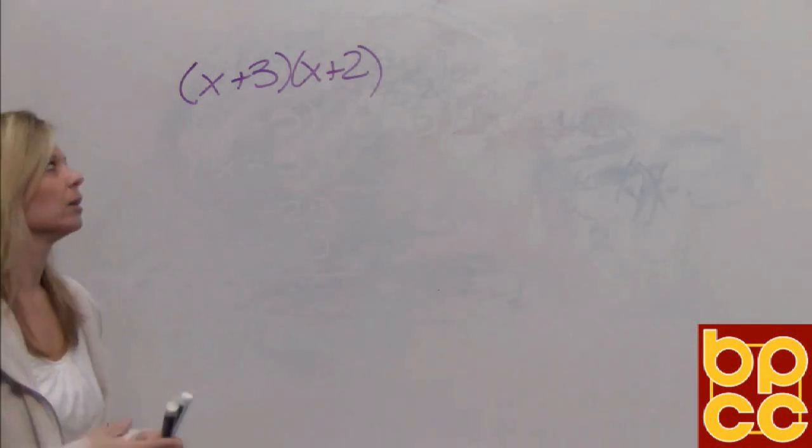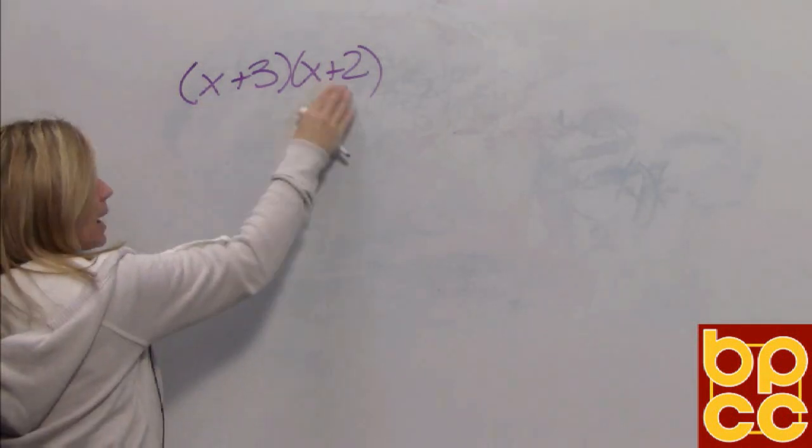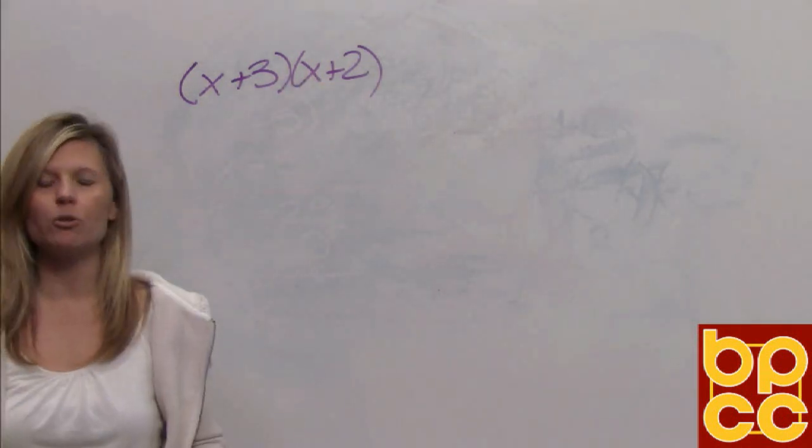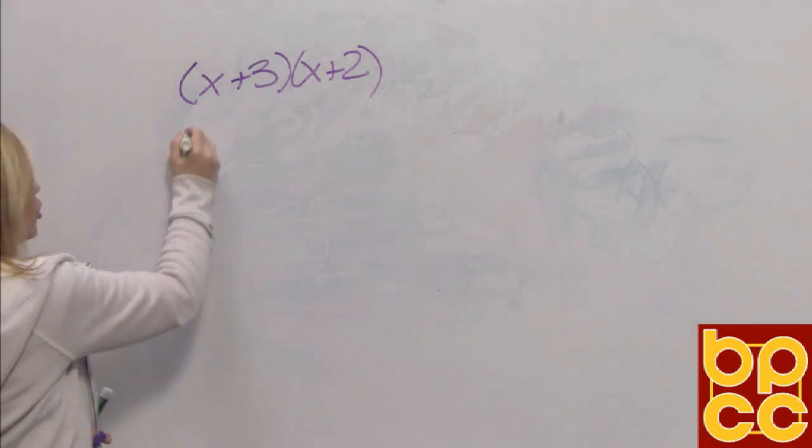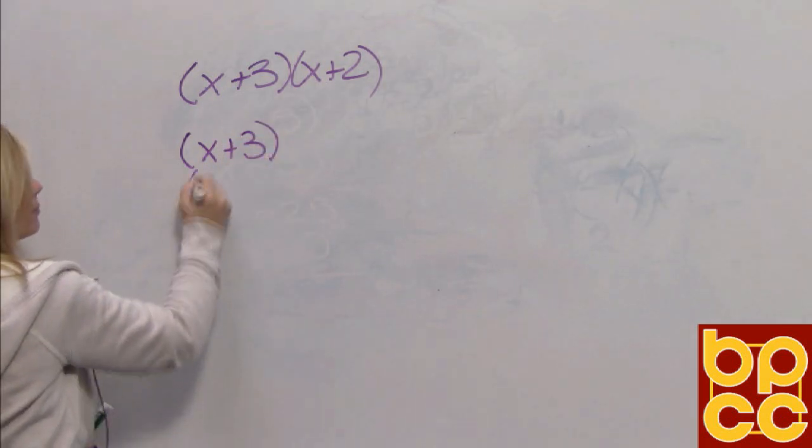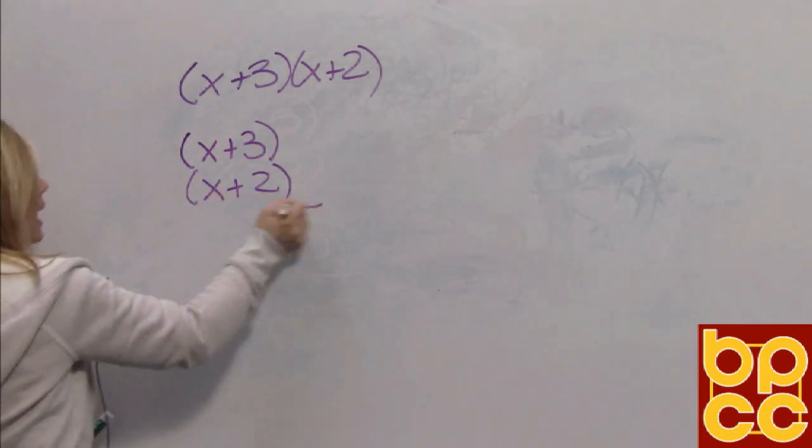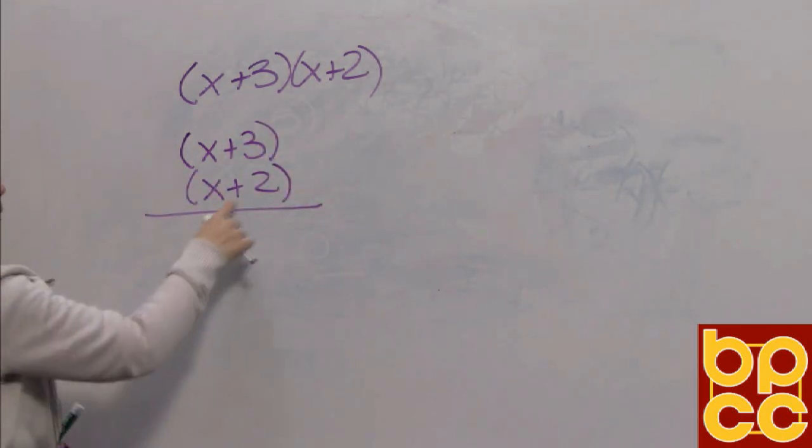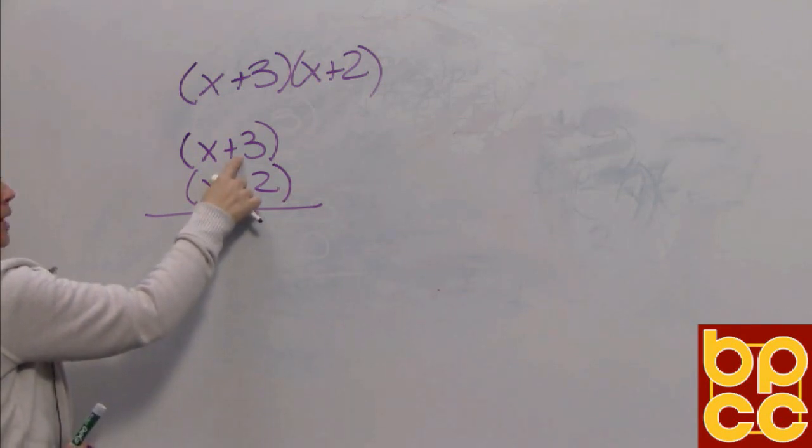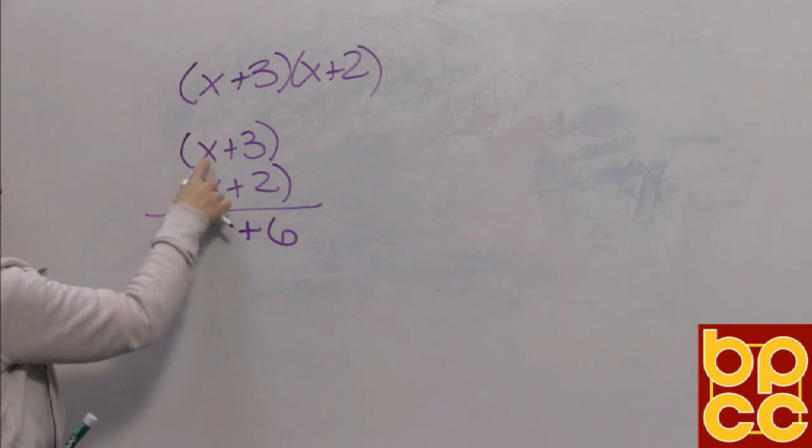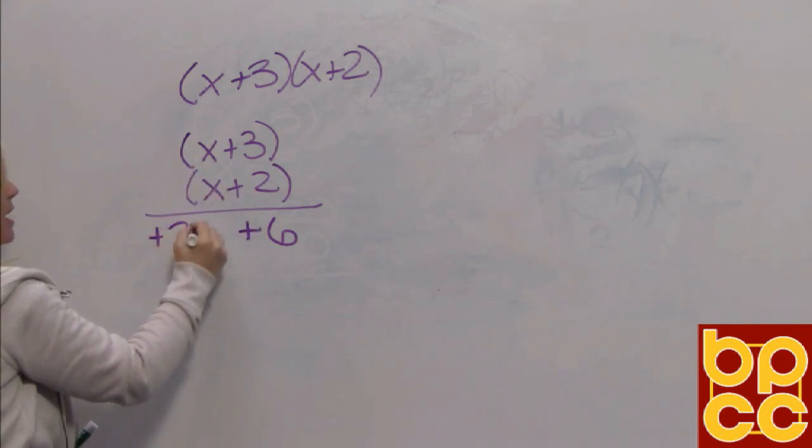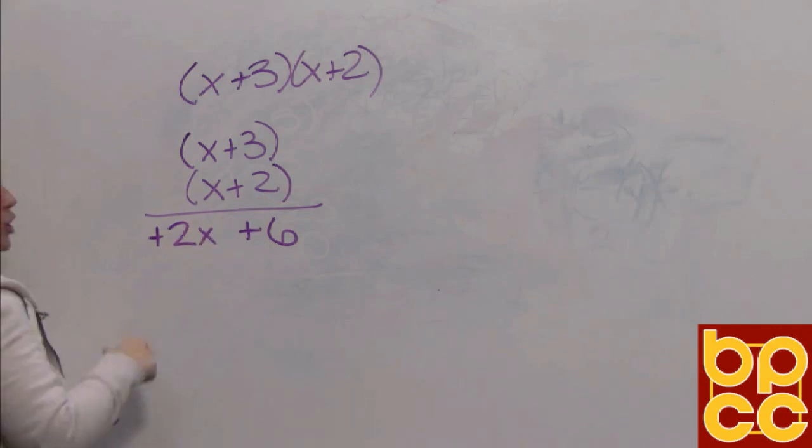So recall, again, these are binomials. It's like multiplying two digit numbers. You could do it the long way. You could list it like a third grader and multiply. And we would distribute positive 2 times positive 3 is positive 6. Positive 2 times x is positive 2x. Okay, we're done with the 2. So we put our placeholder.